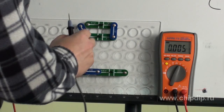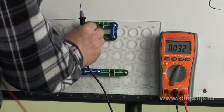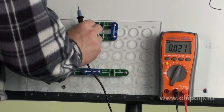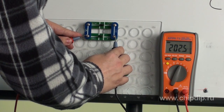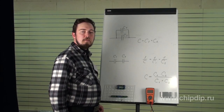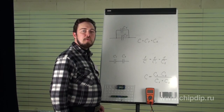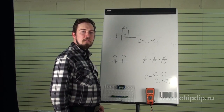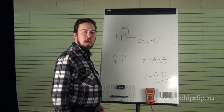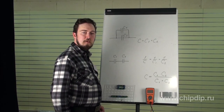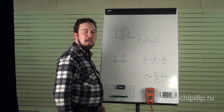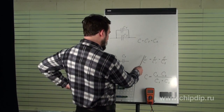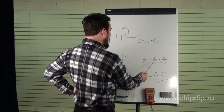In other words, in order to obtain larger capacitances, we need to connect the capacitors in parallel. When the capacitors are connected in series, the reciprocal of the total capacitance will be equal to the sum of the reciprocals of individual capacitances: 1 divided by C equals 1 divided by C1 plus 1 divided by C2. This capacitance will always be lower than the minimum value of a capacitor that is part of the bank.